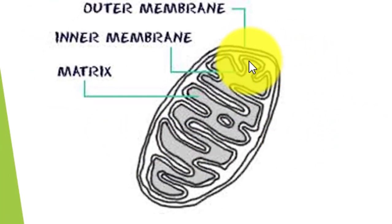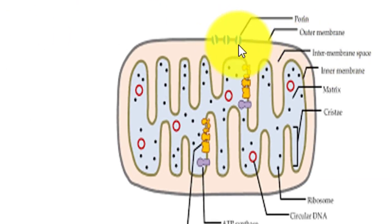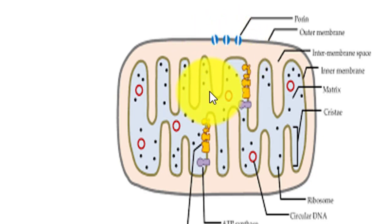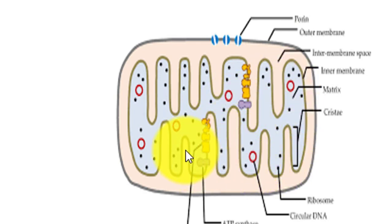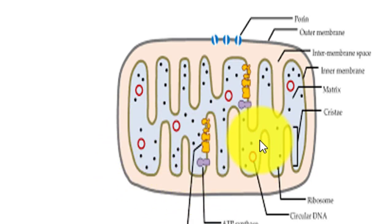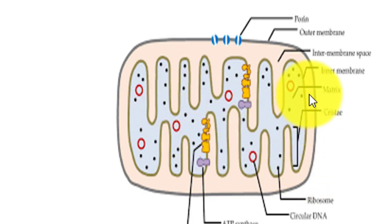Mitochondria is a separate oval-shaped cell organelle. It has two membrane coverings instead of just one. Other cell organelles in a eukaryotic cell have a single membrane, but mitochondria has two membrane coverings. The outer one is porous — you can see here it's very porous — and the inner one is deeply folded. Because of these folds, the surface area increases, providing more surface area for ATP-generating chemical reactions to take place.